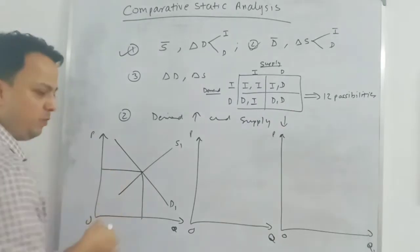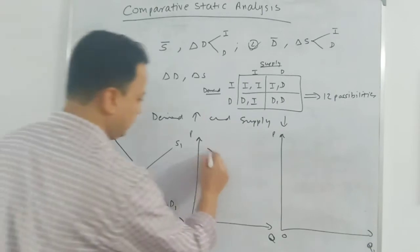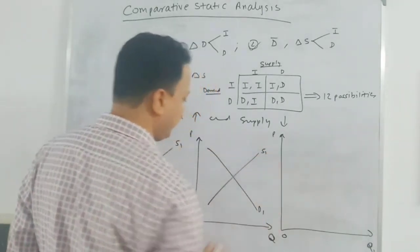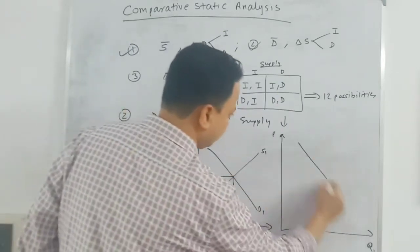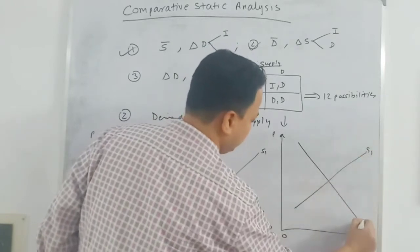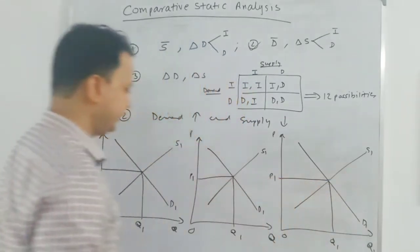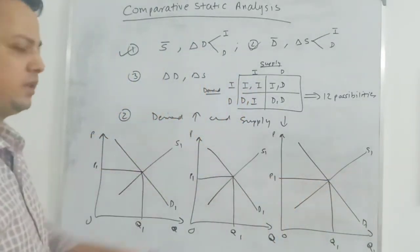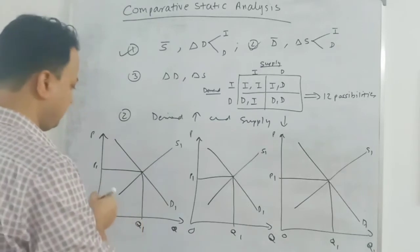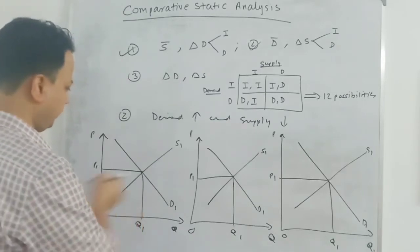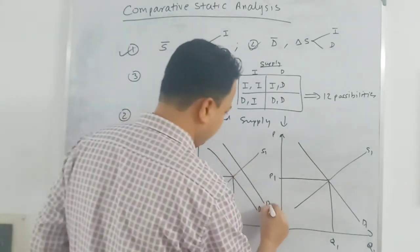Starting with the initial equilibrium at P1, Q1 — this will become the old equilibrium once a change occurs. Demand increases — so the demand curve shifts rightward — and the supply decreases, so the supply curve shifts leftward.